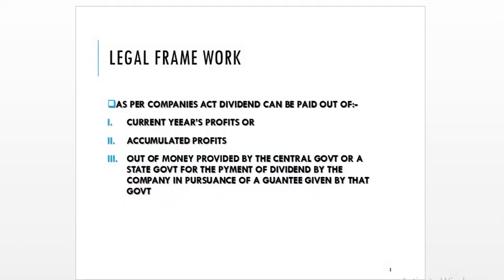As per the Companies Act, dividend can be paid out of the current year's profits, accumulated profits, or out of money provided by the central government or a state government for the payment of dividend by the company in pursuance of a guarantee given by that government.